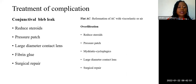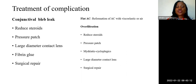When there is conjunctival bleb leak, reduce the steroid, apply a pressure patch. An enlarged diameter contact lens can be used, or fibrin glue, or surgical repair if conservative management fails. If the anterior chamber is flat, reform it using viscoelastic or saline. If overfiltration is observed — Seidel negative, pressure less than 5, and the anterior chamber is shallow — reduce the steroid, put a pressure pad, use a cycloplegic agent, large diameter contact lens, or surgical repair.